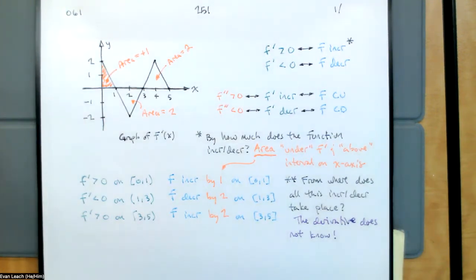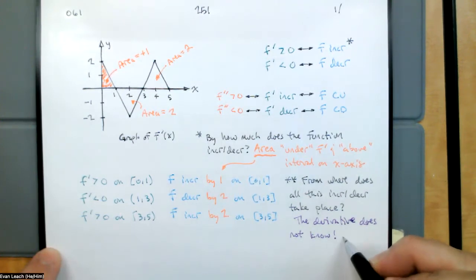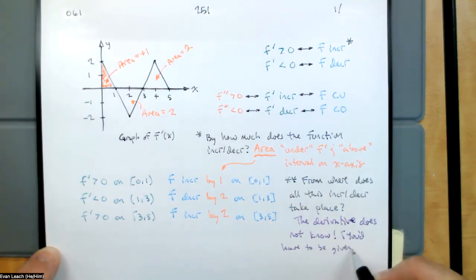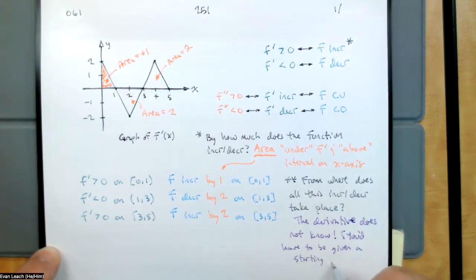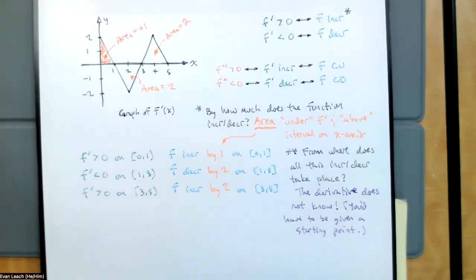So if I want you to draw the graph of the function, I have to tell you where it started, or where it ended up, or where it was at some point in the middle. I'd have to tell you a starting point. That's a piece of information that is not contained in the derivative.